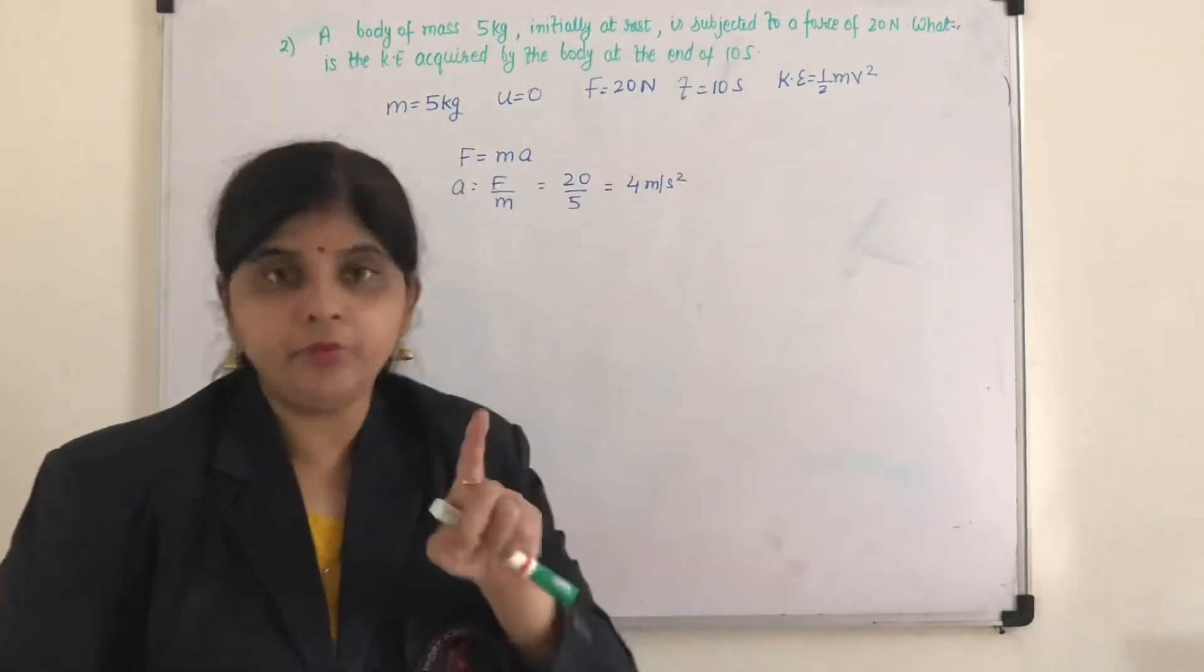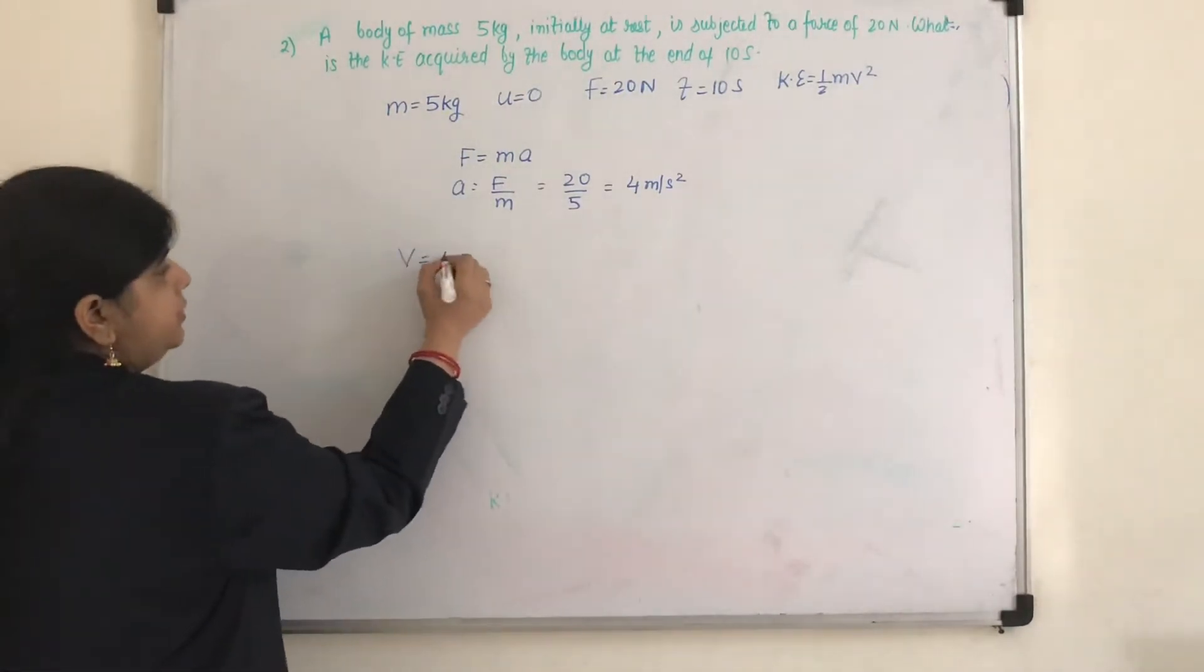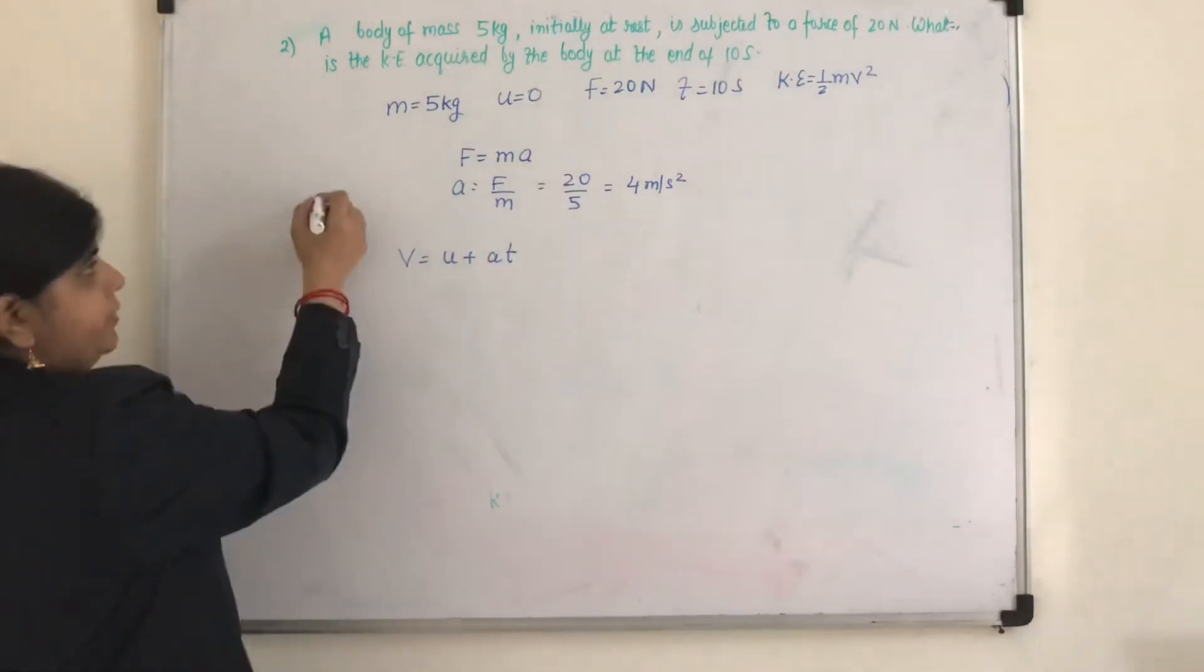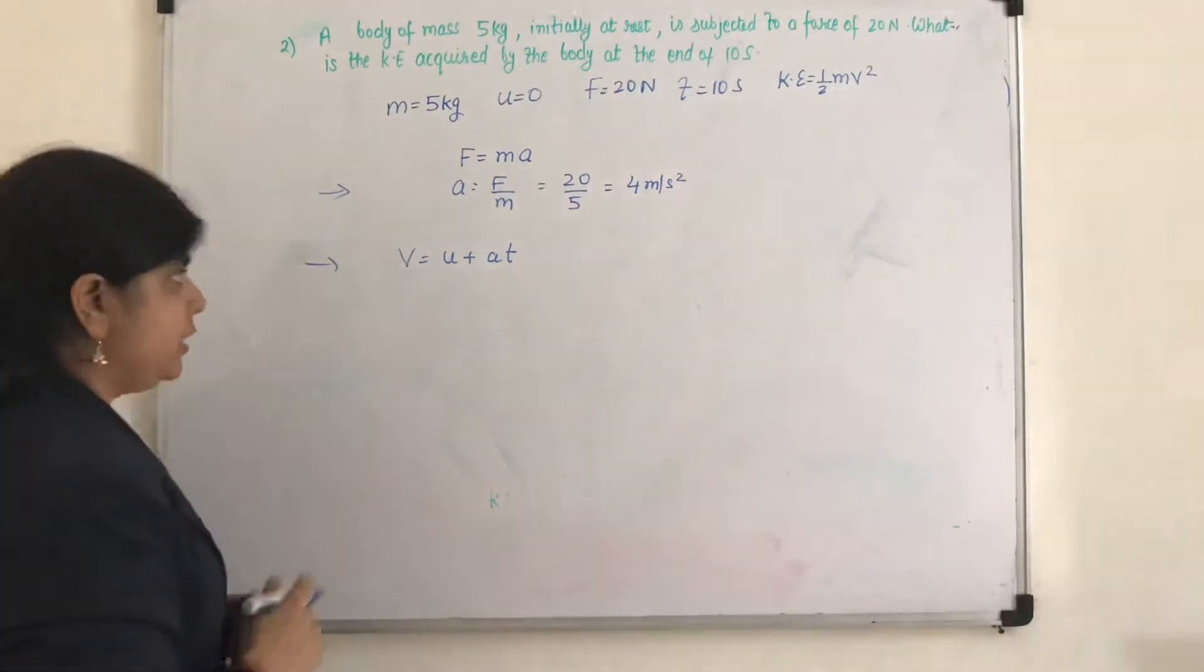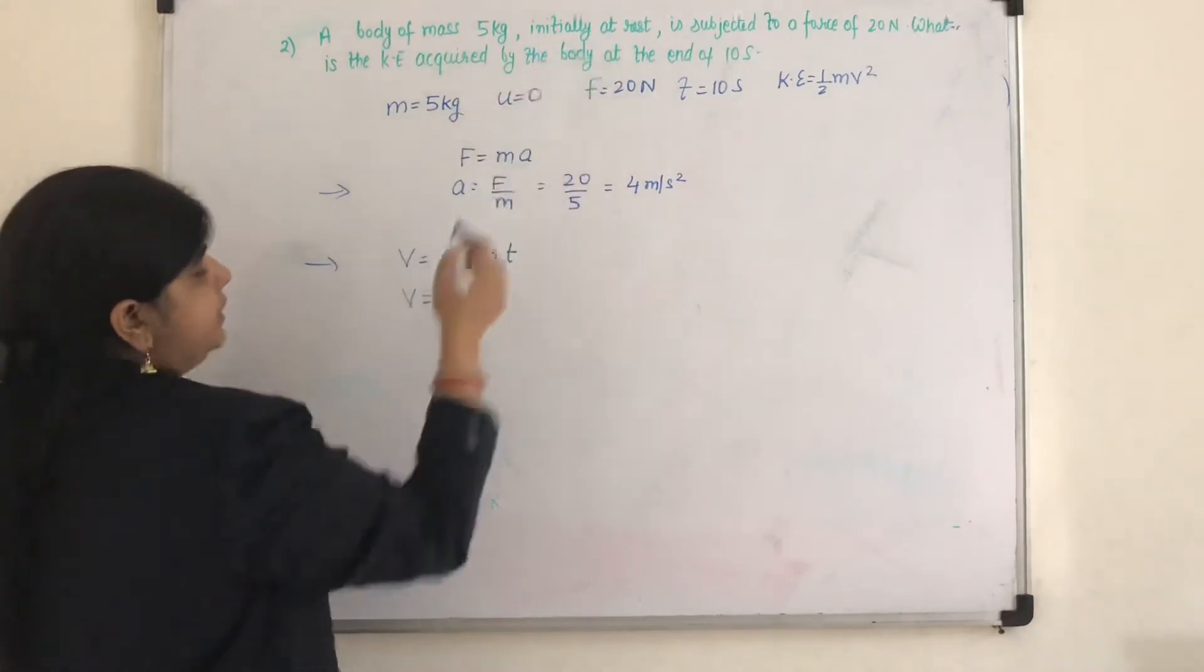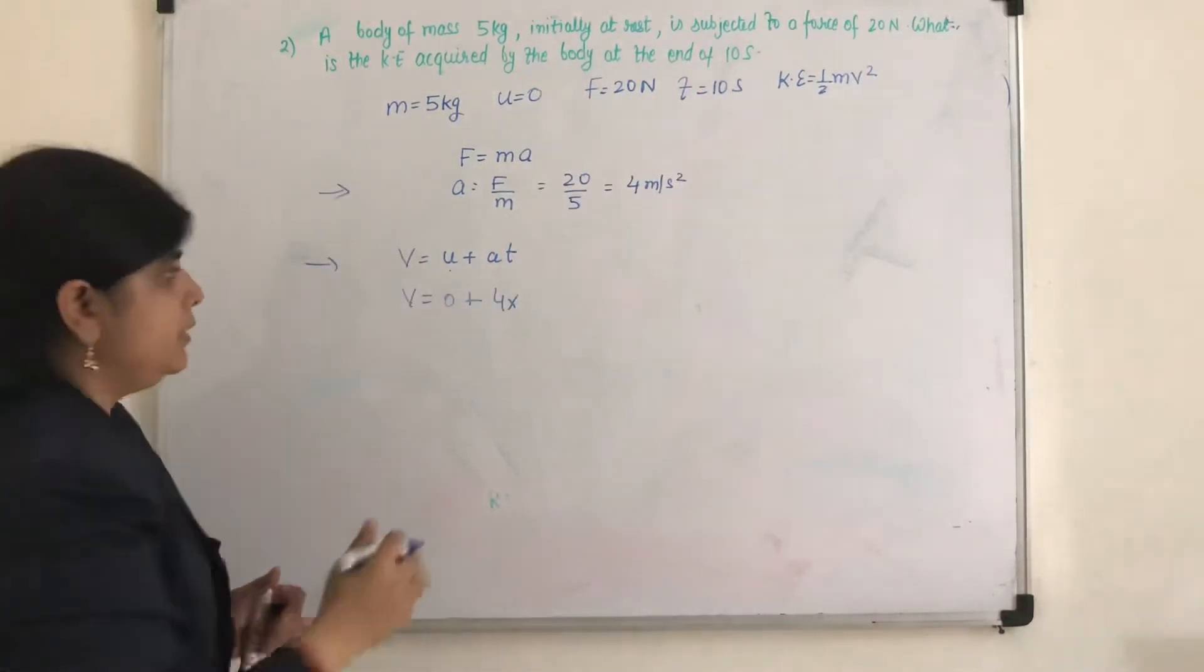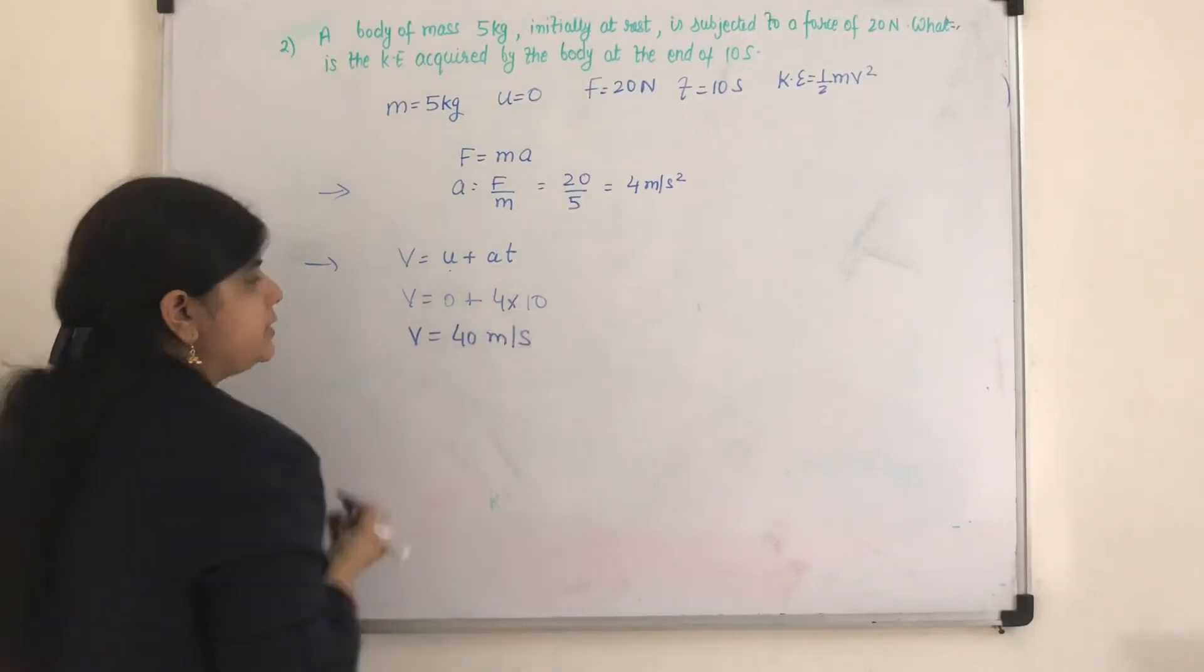Now what I need to calculate? I need to calculate the value of v. So using equation of motion, v is equal to u plus a t. Second step. So first step we calculated a. Second step I will calculate the value of v. So v equals, now initial velocity it is given it is at rest, plus a into t. So 4 into how much time it has been accelerated? 10 seconds. So 10. So final velocity v is 40 meter per second.